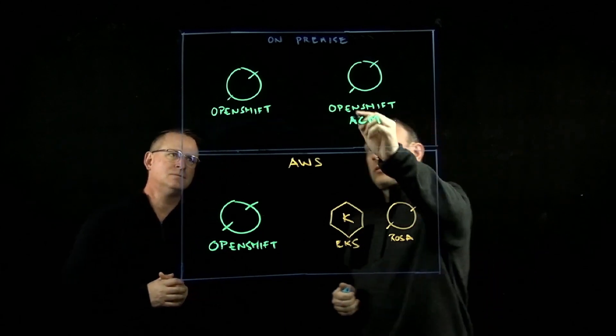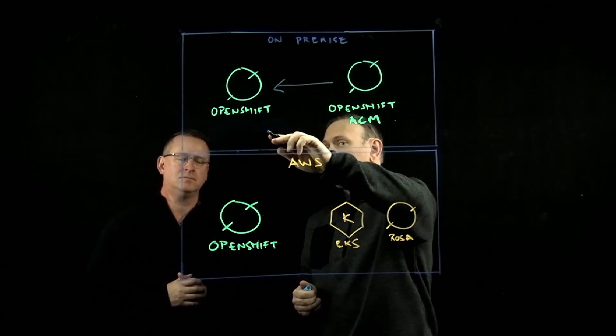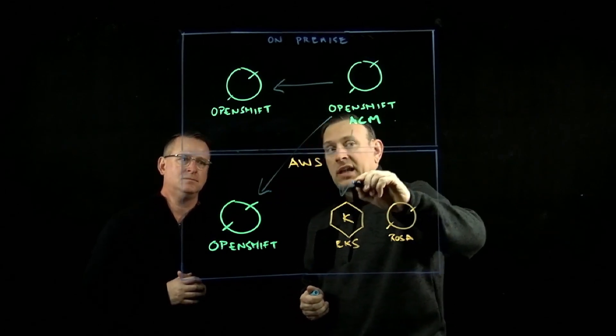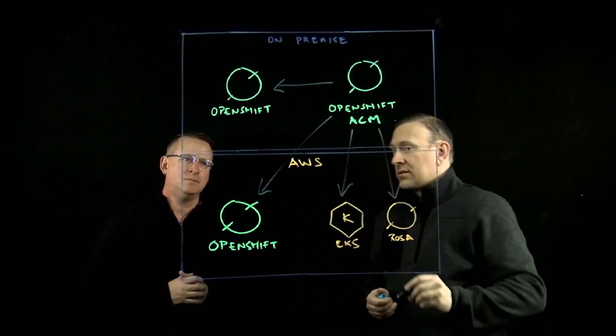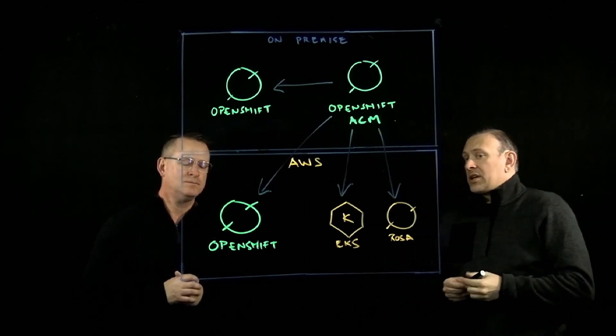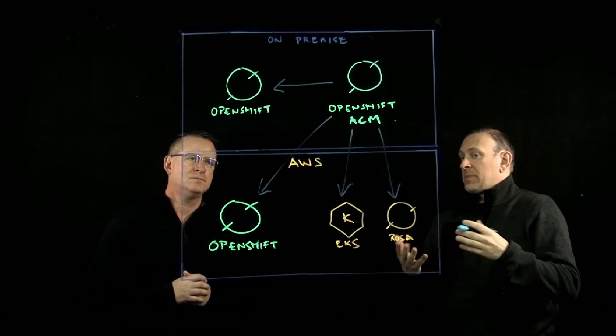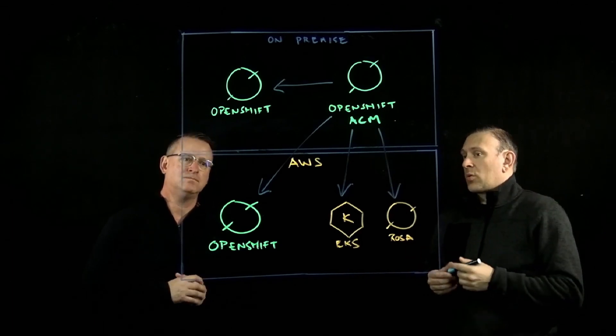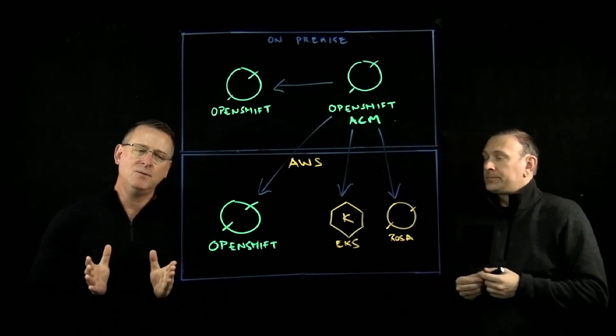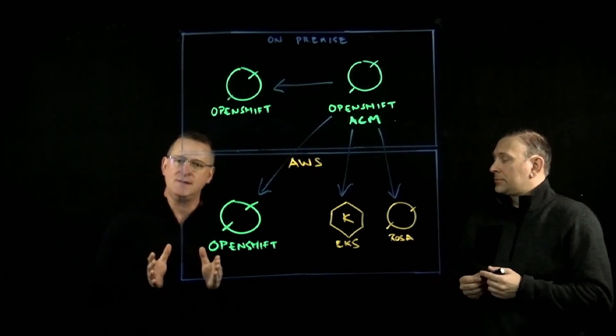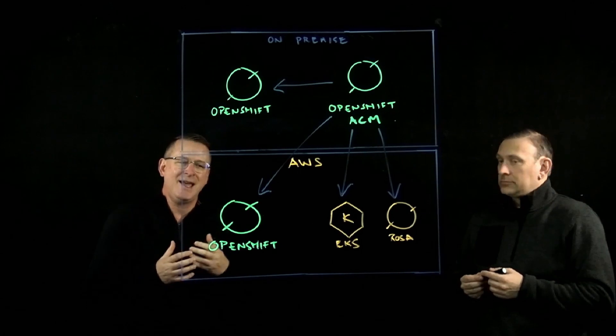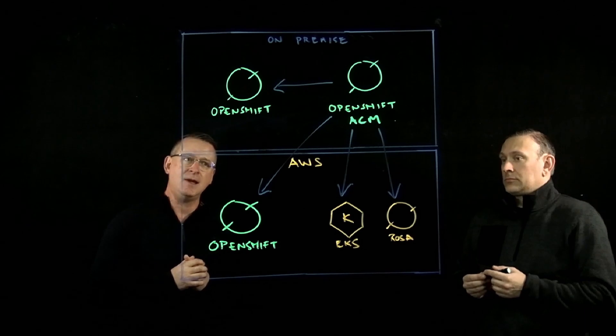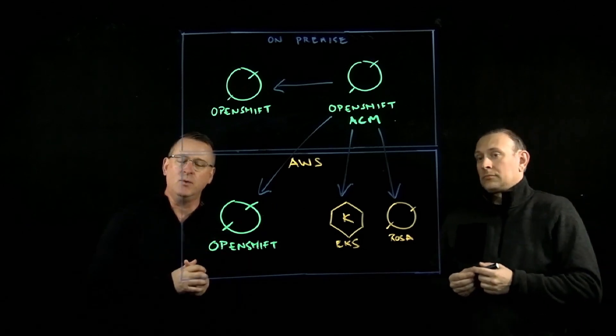So you're basically saying ACM can manage both OpenShift on-prem, it can manage OpenShift running in AWS, it can manage EKS, and it can manage ROSA? That's exactly right. So what are some of the limitations when you're managing third-party vanilla Kubernetes services, like maybe an EKS or a standalone Kubernetes cluster? The main limitation with that is all you can do is import it and visualize it. You can't actually export it out or push something out and create an additional cluster with ACM. It's simply for read-only purposes.